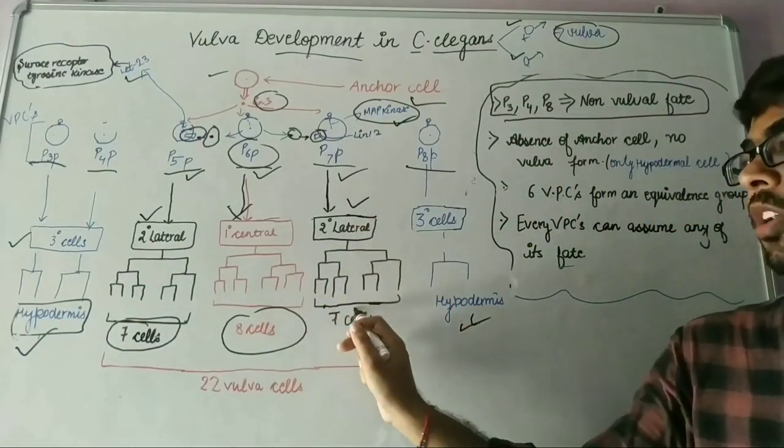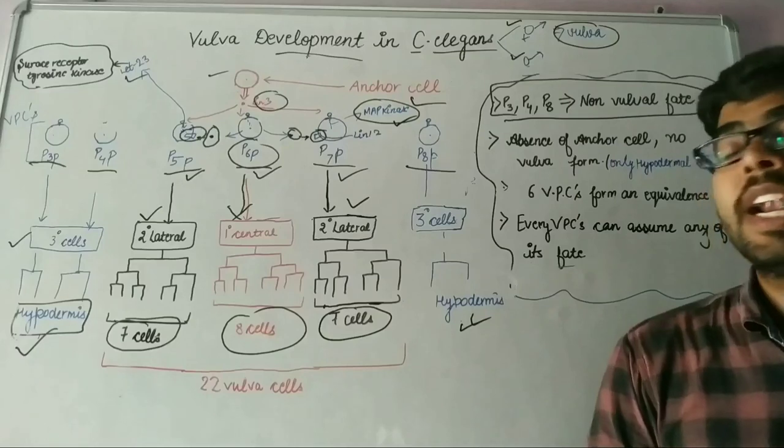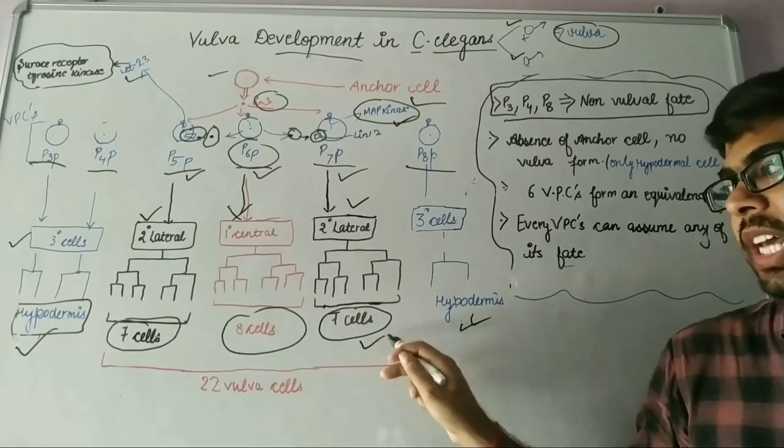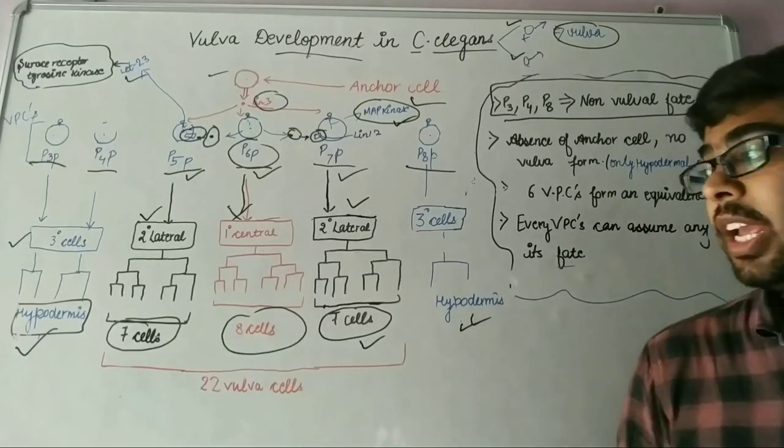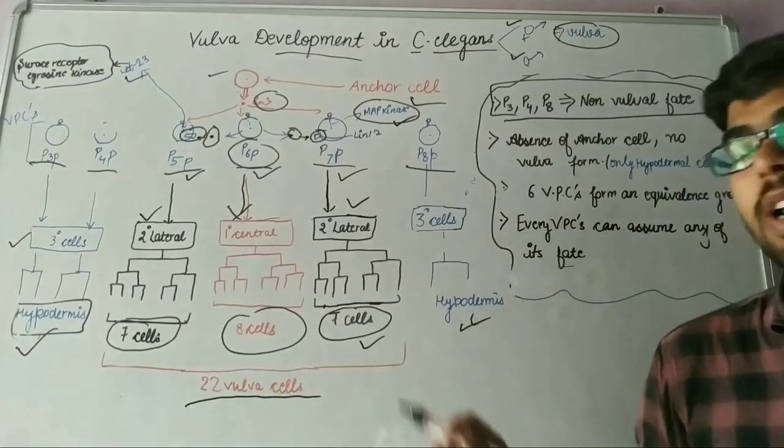Similarly, P7P will generate secondary lateral fate and produce 7 vulva cells. In this way, there are 22 vulva cells.